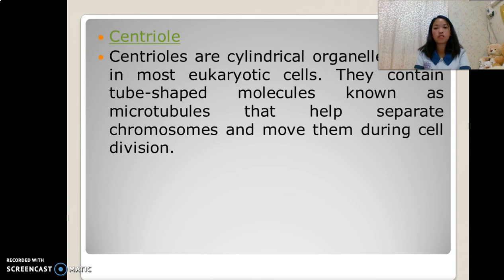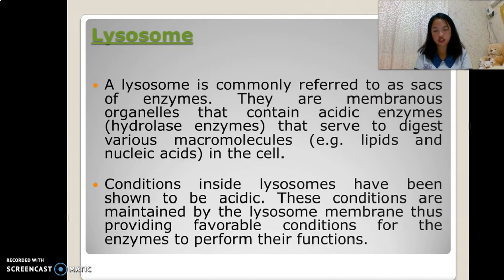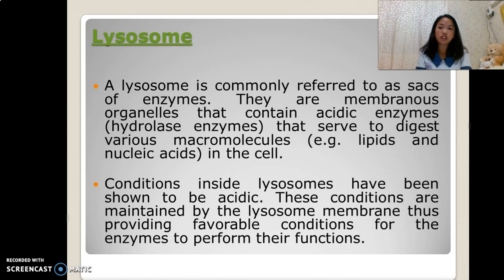Centrioles are cylindrical organelles found in most eukaryotic cells. They contain tube-shaped molecules known as microtubules that help separate chromosomes and move them during cell division. Lysosomes are commonly referred to as sacs of enzymes — membranous organelles that contain acidic enzymes serving to digest various macromolecules, such as lipids and nucleic acids, in the cell.